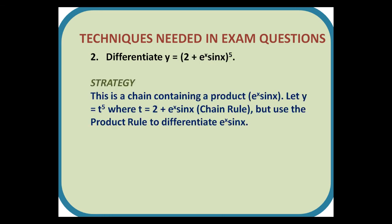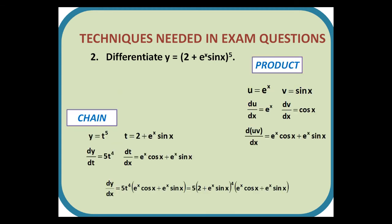Number 2. Differentiate y equals 2 plus e to the x sin x, all to the power of 5. Strategy: This is the other way around, with a chain containing a product, e to the x sin x. Let y equal t to the 5, where t equals 2 plus e to the x sin x, the chain rule. But use the product rule to differentiate e to the x sin x. So the differential of e to the x sin x is e to the x cos x plus e to the x sin x, and then this is multiplied by 5t to the power of 4 in the chain rule to obtain our final answer.